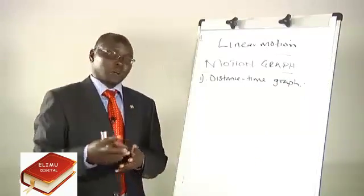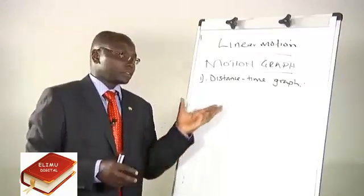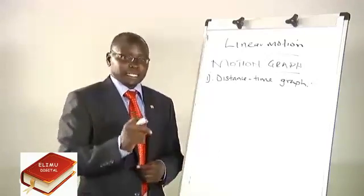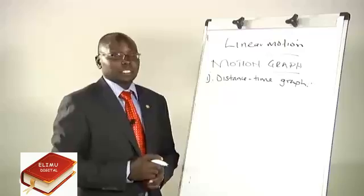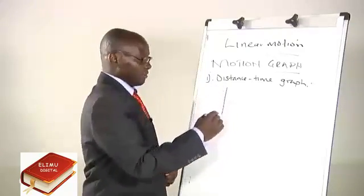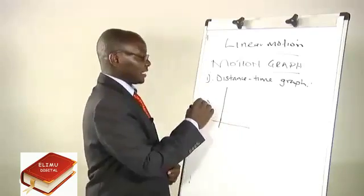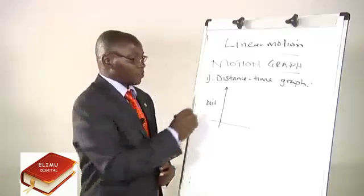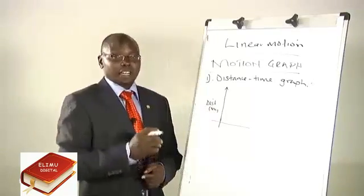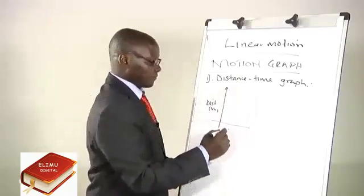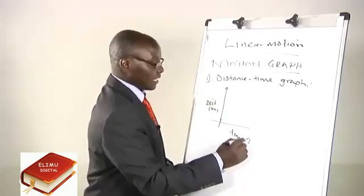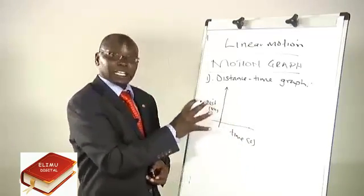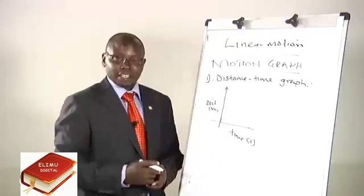I am going to sketch some graphs to show how we can sketch the linear motion graphs. For the distance-time graph, distance is on the y-axis labeled in meters, and time is on the x-axis labeled in seconds. For a stationary body — like a duster sitting still — time is progressing but the distance is not changing, so we show it with a horizontal straight line.